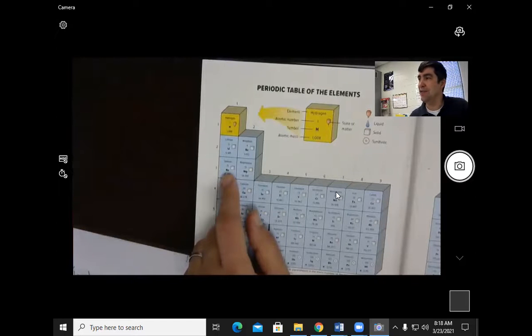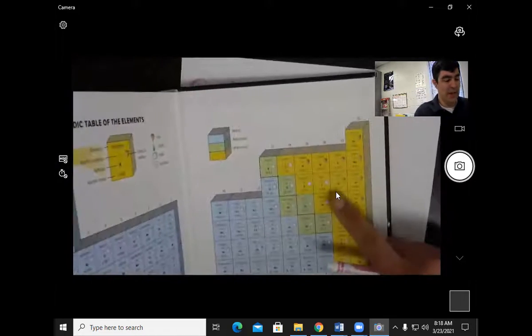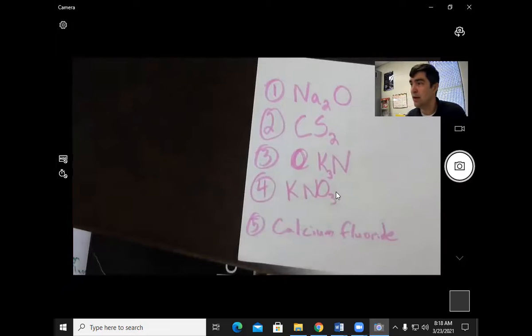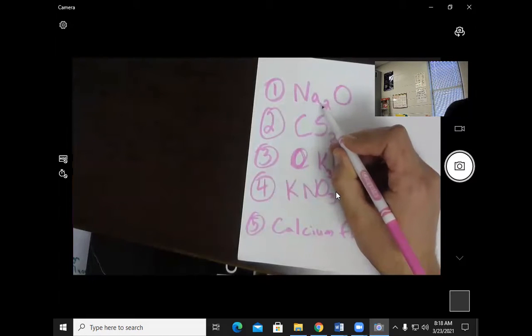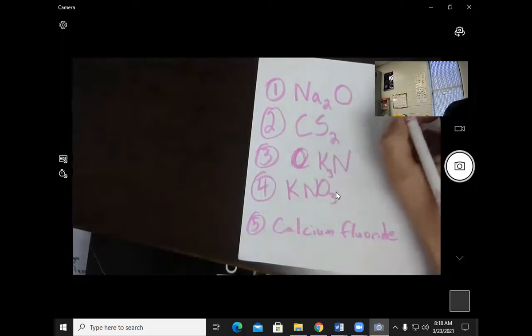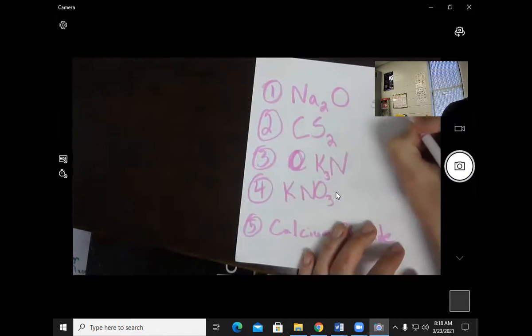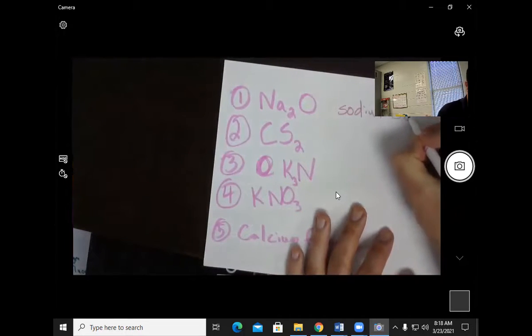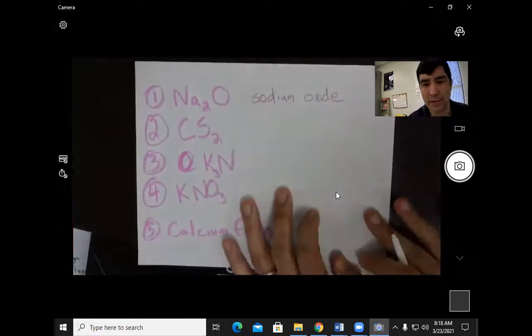So sodium is a metal and oxygen is a non-metal, so this is a what type of bond? Ionic or covalent? It is ionic. So do I use prefixes? You do not. So I just simply call this sodium, and then oxygen, but then I take off the ending and add -ide. So this is just called sodium oxide.